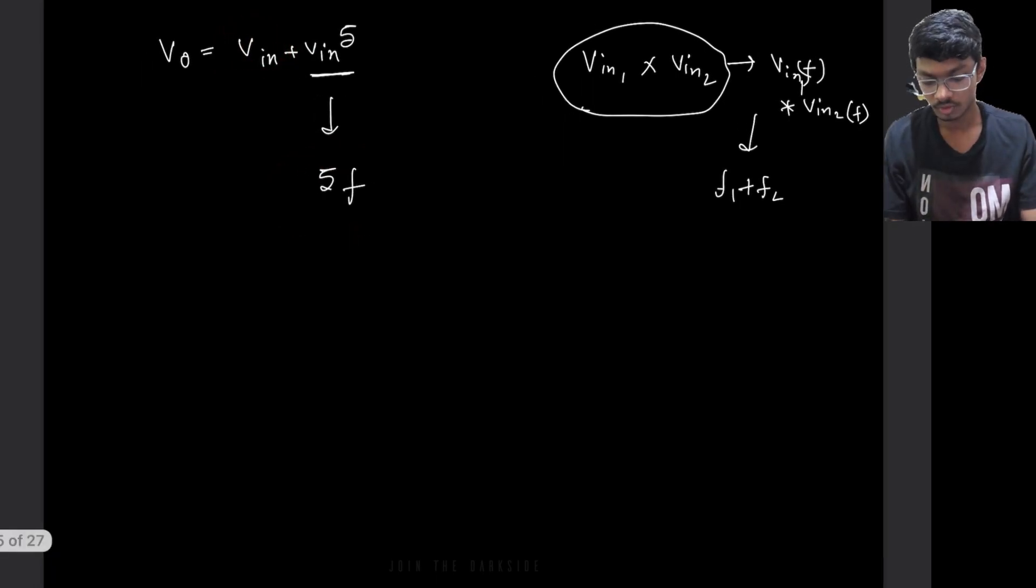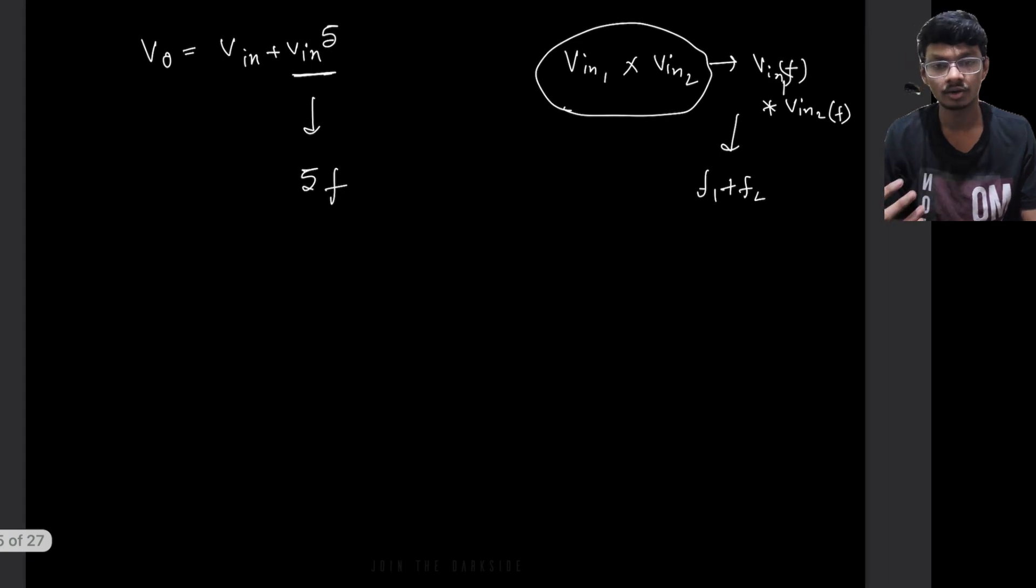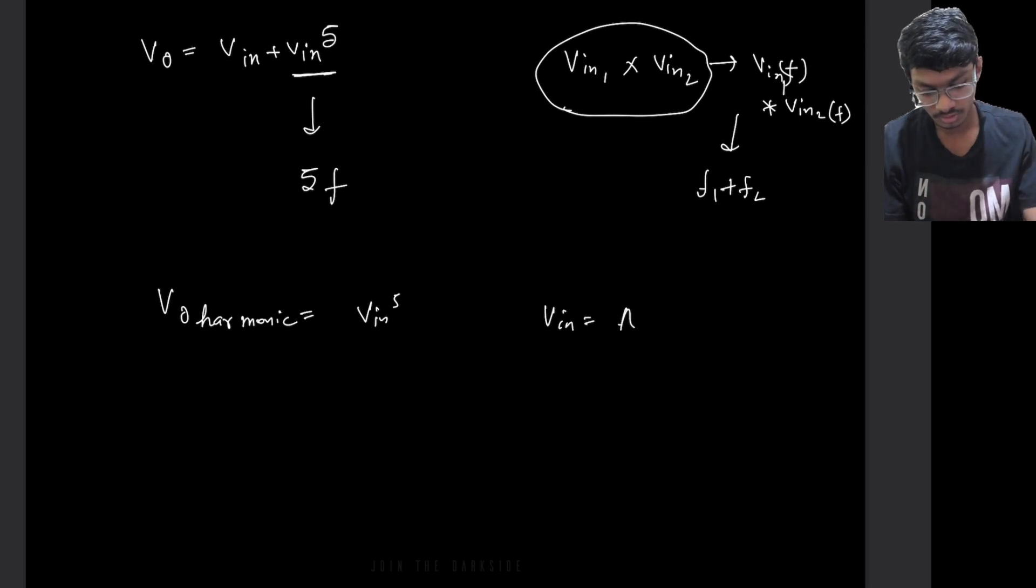Now, as we have got this, now what we need to find out is that what is the output harmonic characteristics? So output harmonic is basically equals to Vin to the power 5. Now let us assume for any sine wave which has an amplitude A. So Vin equals to A sine omega t.